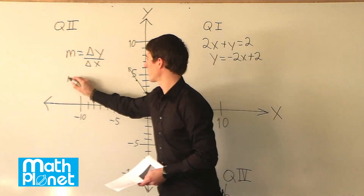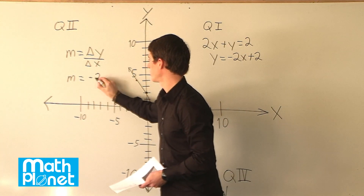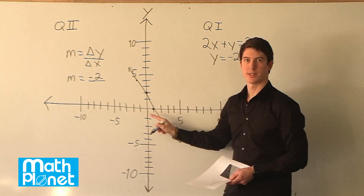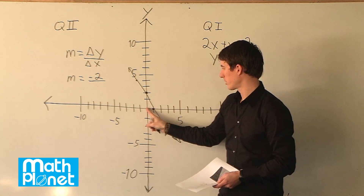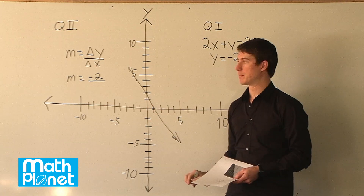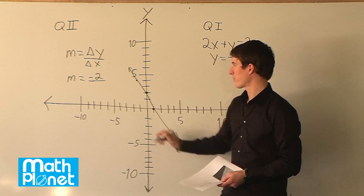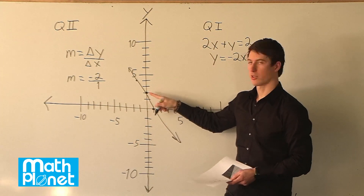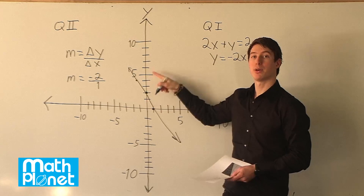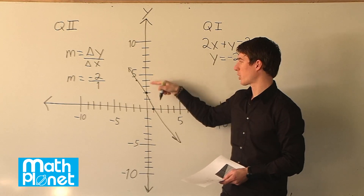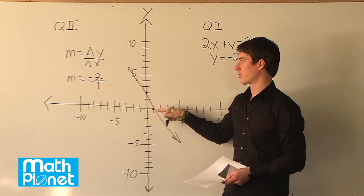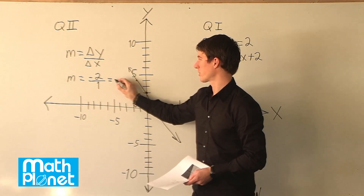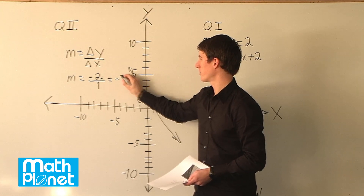So m is equal to negative 2 divided by... now what's the run or the delta x? We go from here to the right 1, so it's positive. Slope is positive if you go up to the right and negative if you go down to the right. So our m is equal to negative 2 divided by 1, which is of course negative 2.